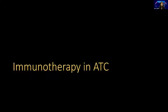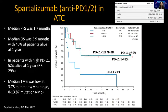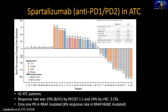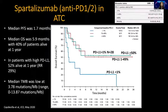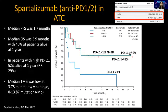No talk is complete without immunotherapy. Spartalizumab is the only study with single-agent immunotherapy in ATC — a phenomenal study with 42 patients worldwide and a response rate of 19%. That doesn't sound like a lot, but for immunotherapy it's fairly good. The challenge will be figuring out who responds. PD-L1 expressing patients are the ones that live longer and have better responses, and we do look at PD-L1 in ATC at MD Anderson.